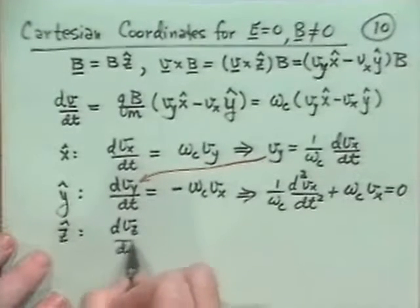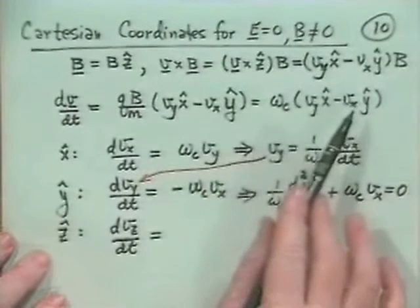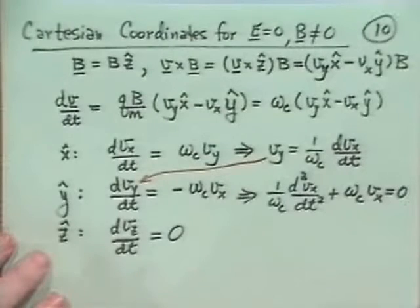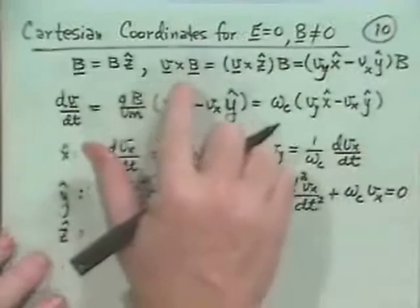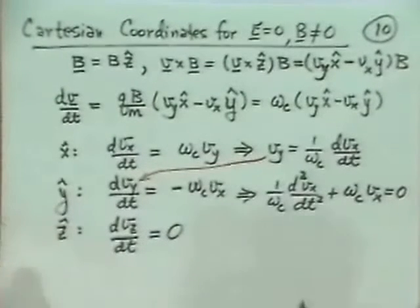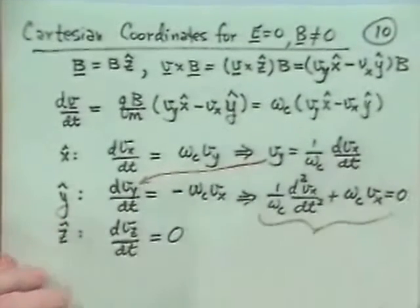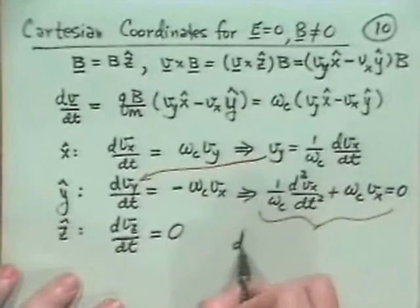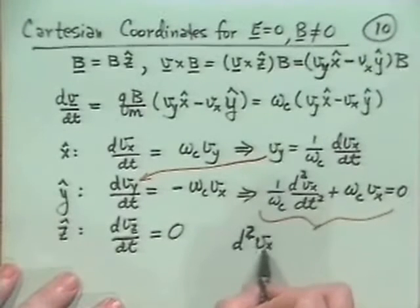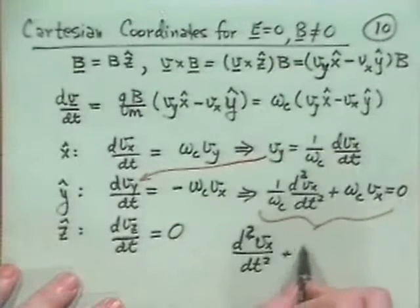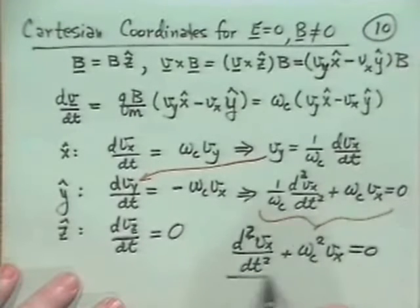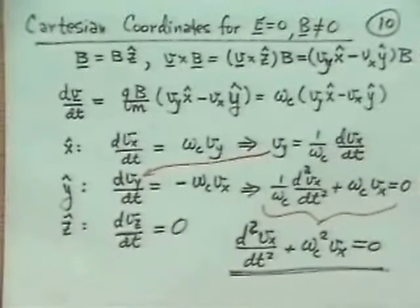And then the net equation becomes 1 over omega sub C d squared VX by dt squared. And then bringing this over to the other side, plus omega sub C VX is equal to 0. What about in the Z direction? We get dVZ by dt. And I take Z hat dot the right-hand side, and I get 0. There's nothing in that direction, because I'm taking Z dot V cross Z. Z hat dot V cross Z hat. So now, let's look at this equation. We'll just multiply through by omega sub C. And then it becomes d squared VX by dt squared plus omega C squared VX is equal to 0. What kind of equation is that? Good old simple harmonic oscillator equation. With what frequency? Well, the oscillation frequency is just the so-called cyclotron frequency.